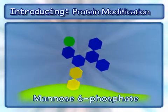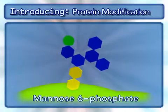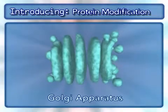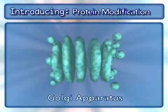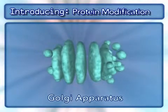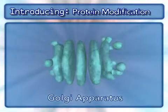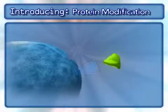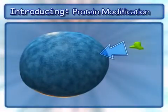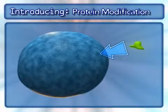One example of this is mannose-6-phosphate. These sugar side-chain modifications occur within the Golgi apparatus. We focus here on the delivery of a hydrolase enzyme to the endosome.